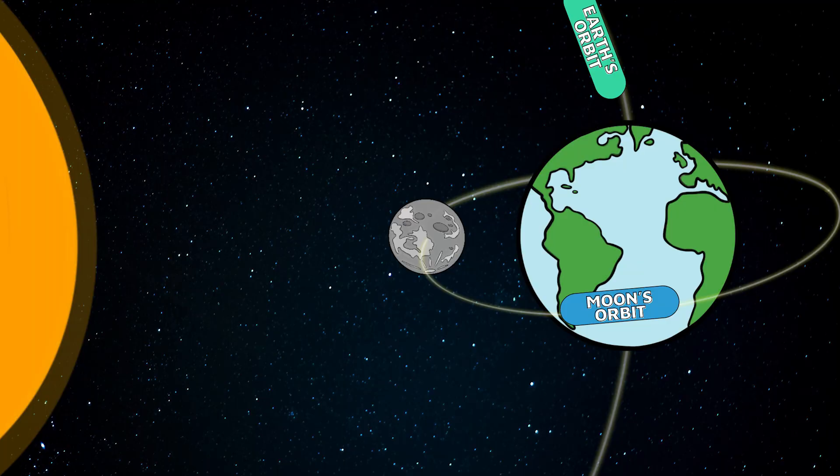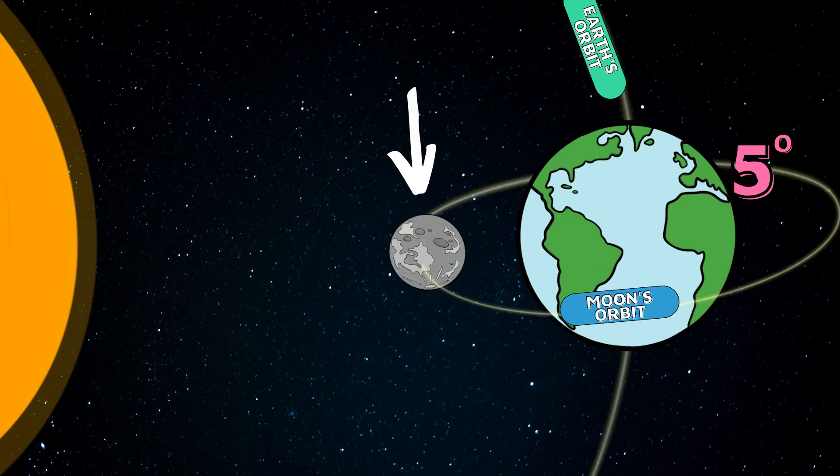Why isn't there an eclipse every month at new moon? If the moon's orbit were perfectly aligned with the earth's, we would, but we don't. That's because the moon's orbit is tilted by about five degrees and not perfectly circular. What that means is at new moon, the moon can be as much as five degrees away from the sun, passing above or below the sun in the sky. But sometimes everything aligns, and at new moon, the moon falls perfectly between the sun and the earth. And when that happens, we get a solar eclipse.